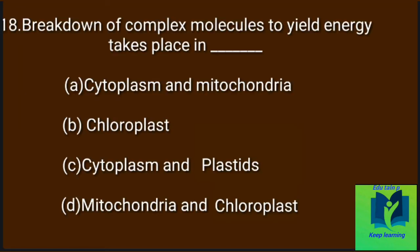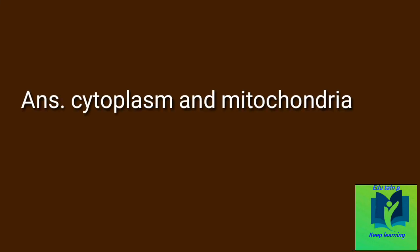Breakdown of complex molecules to yield energy takes place in: Option A: Cytoplasm and mitochondria. Option B: Chloroplast. Option C: Cytoplasm and plastids. Option D: Mitochondria and chloroplast. Answer: Cytoplasm and mitochondria.